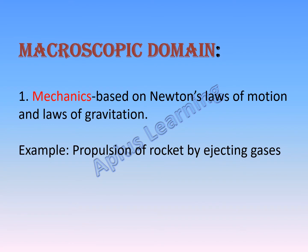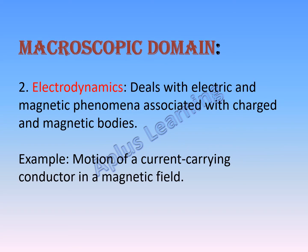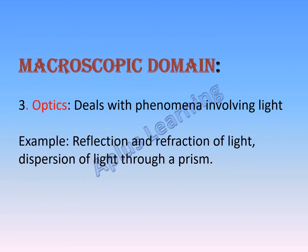In the macroscopic domain, the first branch is mechanics, which is based on Newton's laws of motion and laws of gravitation. It is concerned with the motion of particles, rigid and deformable bodies, and general systems of particles. Examples include propulsion of a rocket by ejecting gases, sound waves, and water waves. Next, electrodynamics deals with electric and magnetic phenomena and is associated with charged and magnetic bodies. An example is the motion of a current-carrying conductor in a magnetic field.